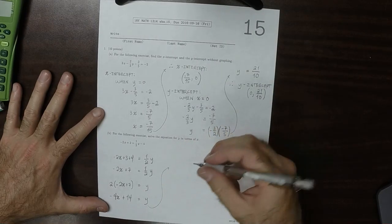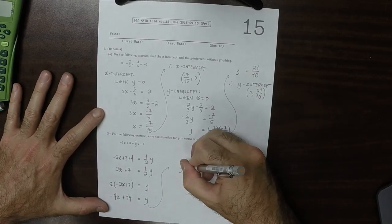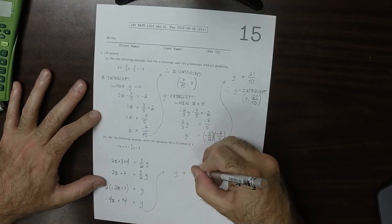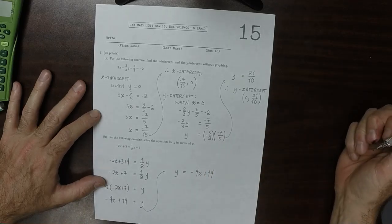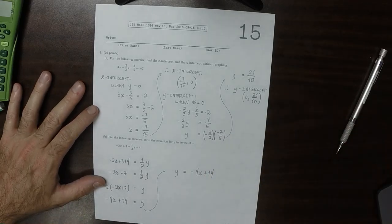So if you like, usually when you're solving for something, you write it on the left. So y is negative 4x plus 14. Then I'm on the right hand side. So this is great. And alright, thank you.